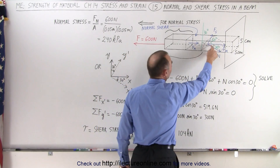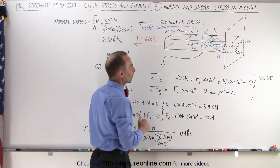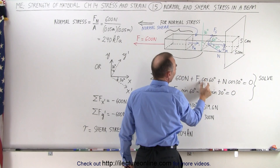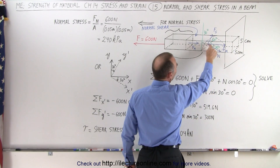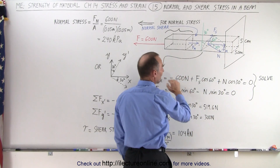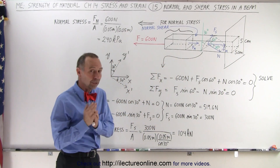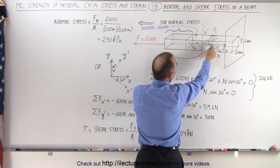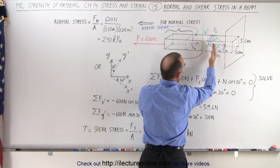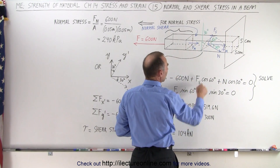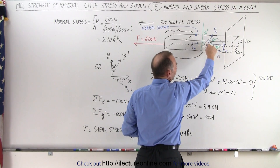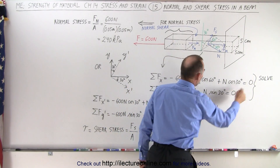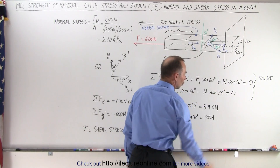To determine the normal force and shear force, we can add up all the forces in the x direction: negative 600 newtons plus the shear force times cosine of 60 degrees plus the normal force times cosine of 30 degrees equals zero. Then we take all the forces in the y direction: the shear force times sine of 60 degrees minus the normal force times sine of 30 degrees equals zero. We can then solve these two equations simultaneously to solve for the shear force and the normal force.